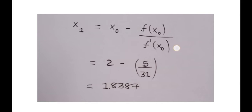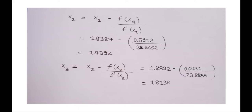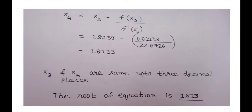Using this value we find our second iteration: x2 is equal to x1 minus f of x1 upon f dash of x1, giving f of 1.8387 and f dash of 1.8387. From this, x2 equals 1.8392. In the same way we find the third and fourth iterations. The third and fourth iterations x3 and x4 are the same up to three decimal places, which means the root of our equation is 1.813.